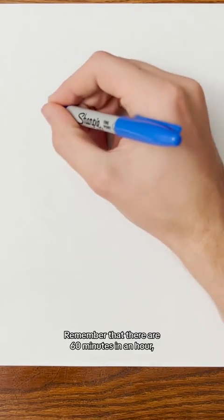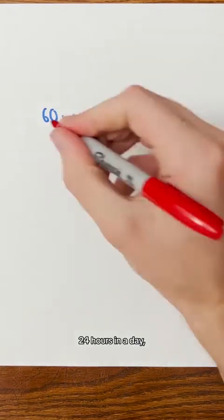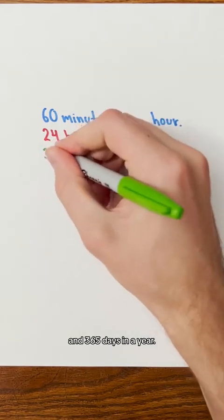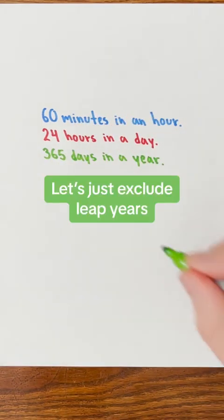That math is very wrong. Remember that there are 60 minutes in an hour, 24 hours in a day, and 365 days in a year. Let's just exclude leap years to make the math easier.